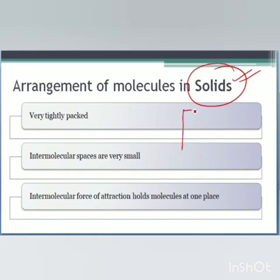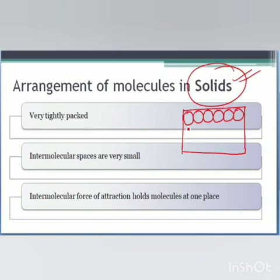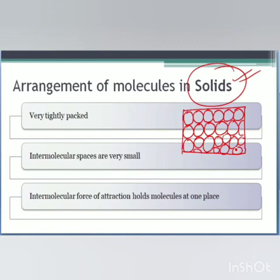Let us draw the diagram of the molecules in a solid. This is one molecule, then we have others, and they are packed very very tightly — that is, there are no spaces left. You can observe from the diagram that the molecules have to be of equal size because we are making a solid object made up of only one kind of atom. The intermolecular spaces between these atoms or molecules is very small since they are packed very tightly.